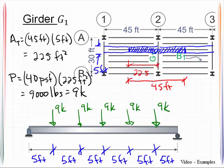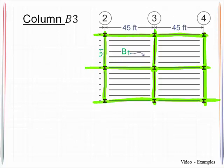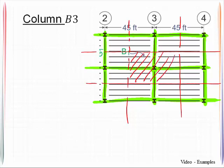Now the last thing we are being asked for is we're being asked to compute the load that acts on column B3. So that is here. And what we will do is we will look at these column lines. There's column lines 2, 3, and 4. And this particular column ABC. We will draw dividing lines halfway through those. And the tributary area for that particular column is the area that's bounded by those dividing lines that we had there before.